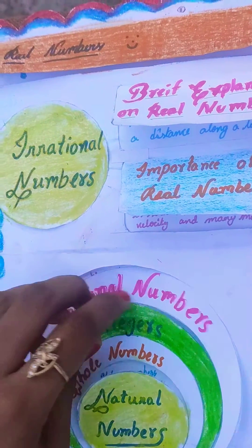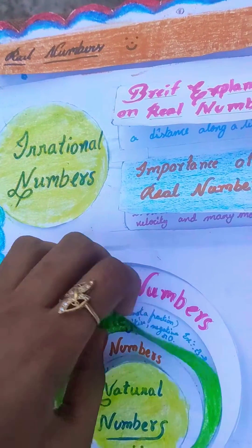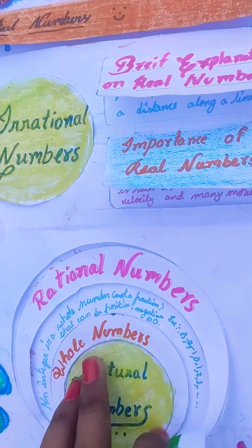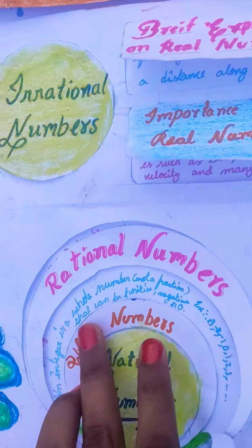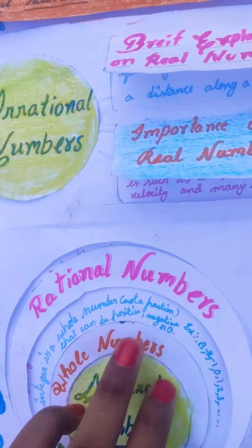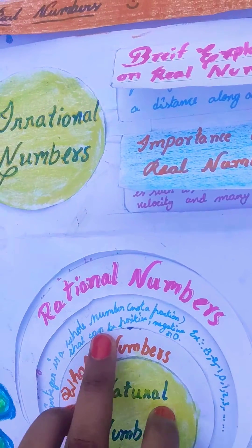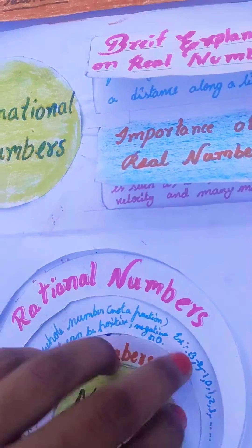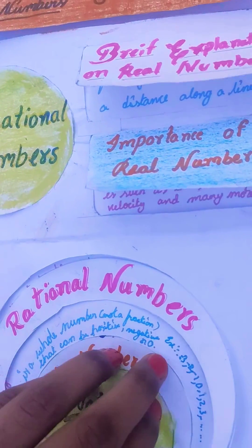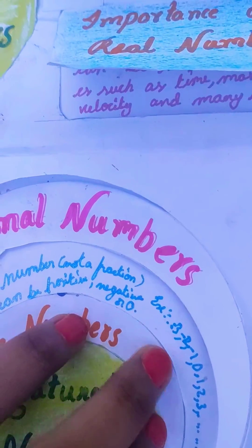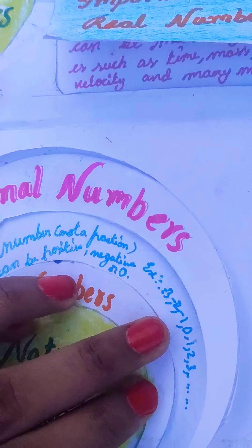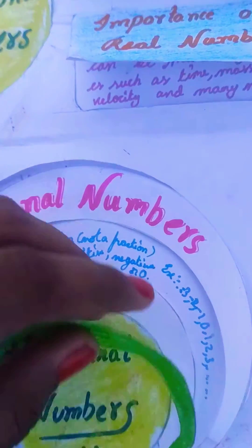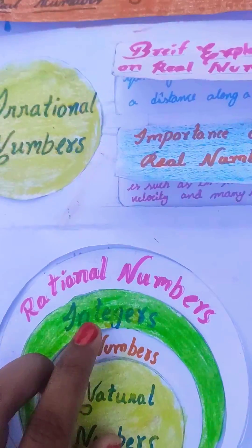Now, integers. An integer is a whole number, not a fraction, that can be positive, negative, or 0. Example: so on, minus 3, minus 2, minus 1, 0, 1, 2, 3, and so on.